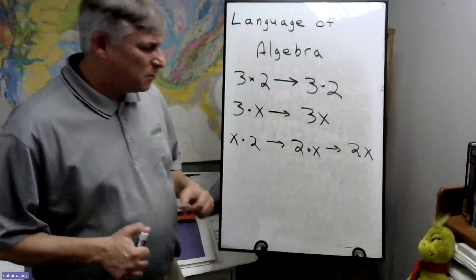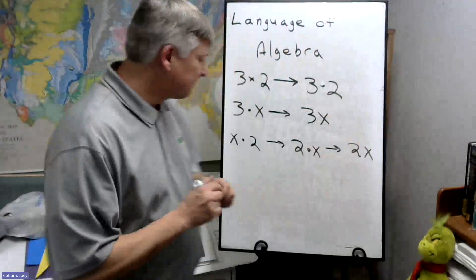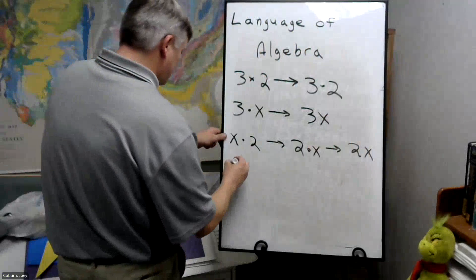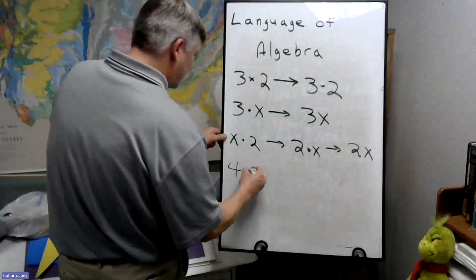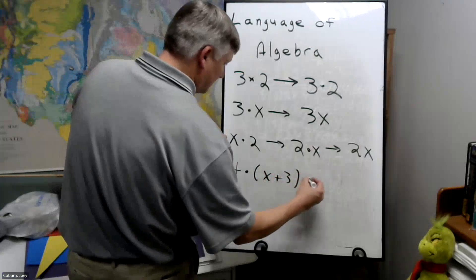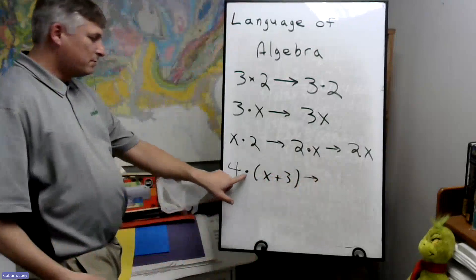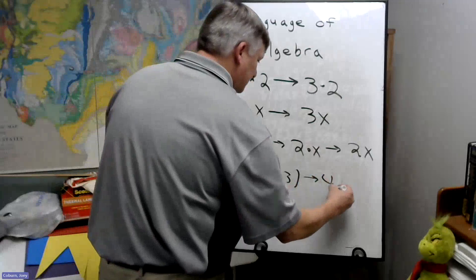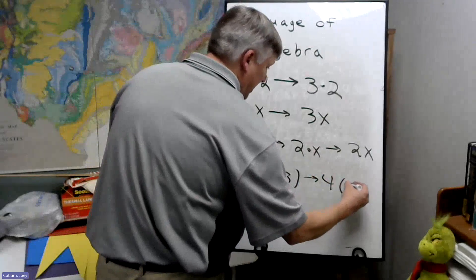Multiply. You'll see this also with parentheses. So 4 times (X plus 3) will remove the multiplication. It's really still there. It's implied.